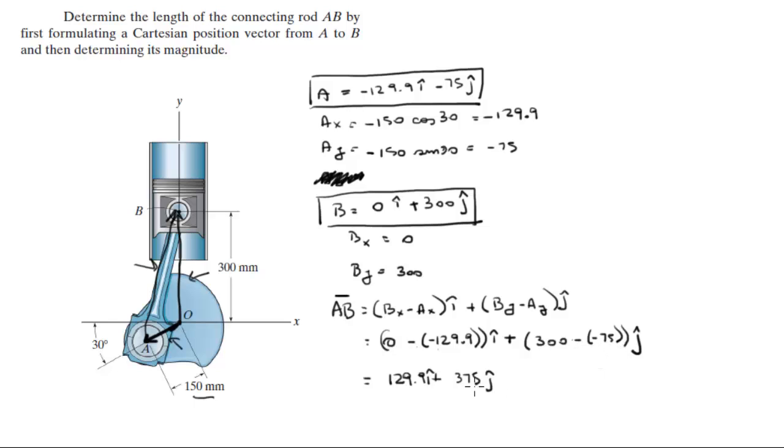Because negative times negative is a positive, so it's 375. So, this is the vector AB.